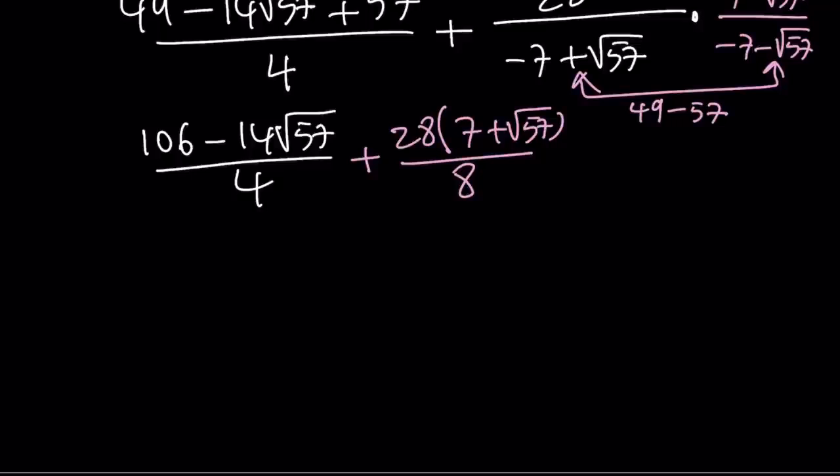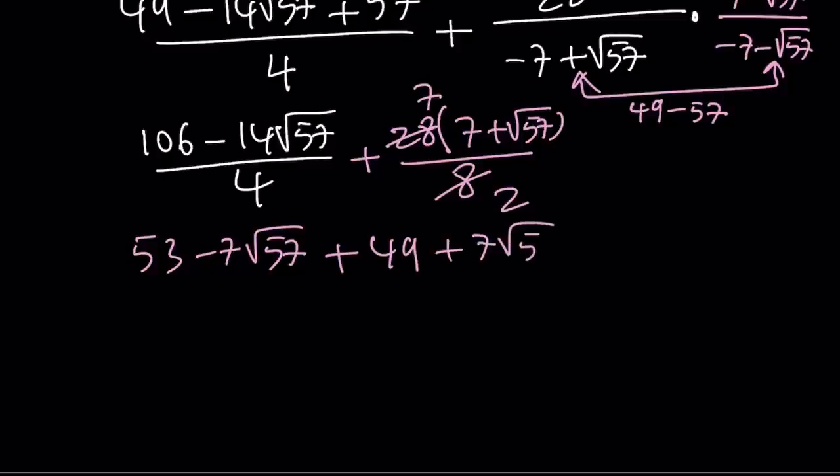Now we can actually either make a common denominator or simplify both of these. Divide by 4, divide by 4, and then divide by 2 here. We're going to get 53 minus 7 root of 57. Now they have a common denominator once we simplify that.